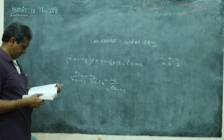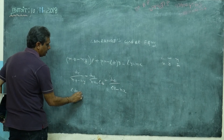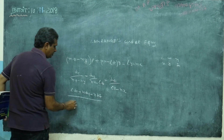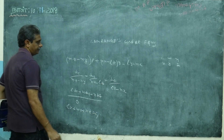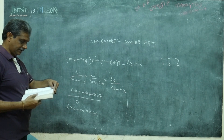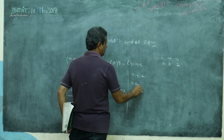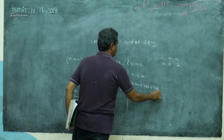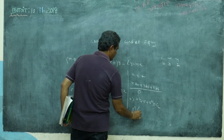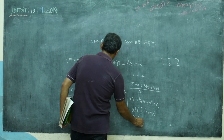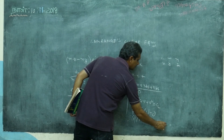Taking multipliers l, m, n: l·dx + m·dy + n·dz, the combined denominator becomes 0. So integrating gives lx + my + nz = c1. Similarly, taking multipliers x, y, z: x·dx + y·dy + z·dz, the denominator becomes 0 again. Integrating gives x² + y² + z² = c2.